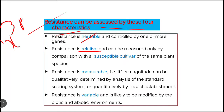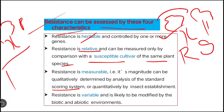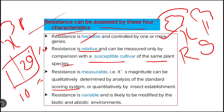Resistance is relative — you can say a variety is resistant only when you compare it with the susceptible variety of the same species. When you compare the two, you will know which plant is resistant. Third, resistance is measurable — its magnitude can be quantitatively determined by a scoring system, for example by measuring the percentage of field damage or the number of insects present on each plant.